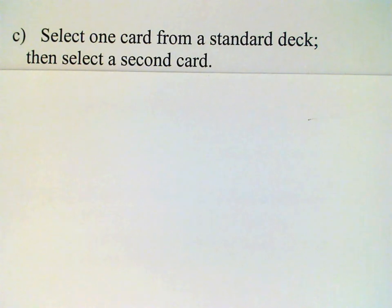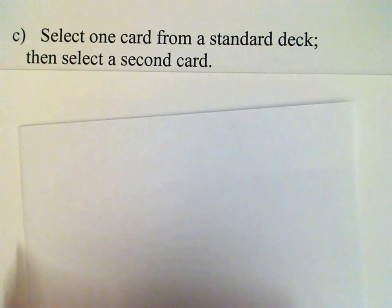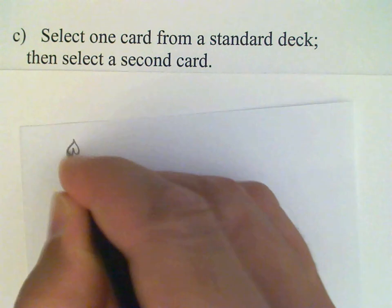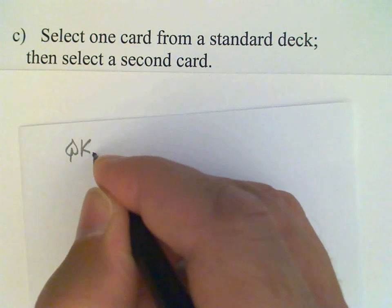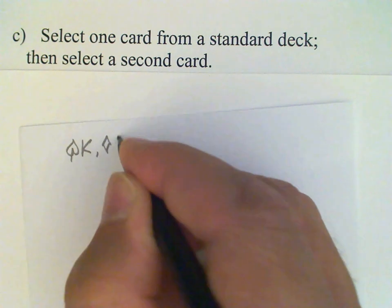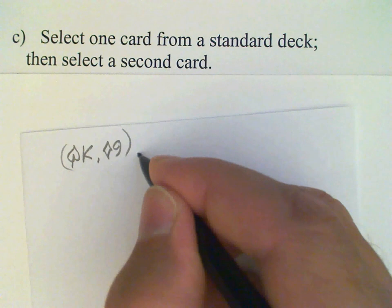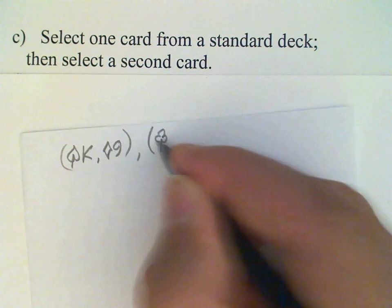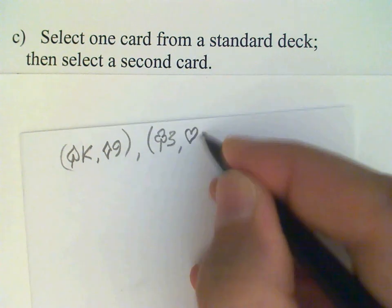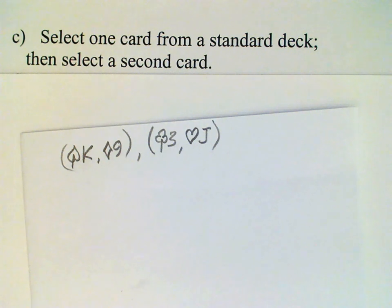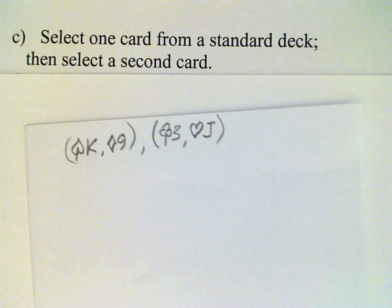I have two other examples of experiments here, but for these experiments it's not possible to write out the entire sample space because the sample space is too large. We can write out a few sample outcomes. First one says select one card from a standard deck, then select a second card. So some of the outcomes would be spade king and diamond nine, and club three and heart jack. You get the idea. And what we can do is count the sample space—that's fairly easy to do.